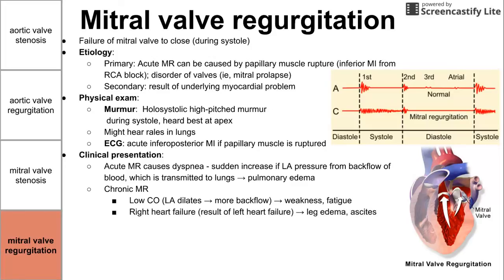You might also see right heart failure. Higher pressures in the left atria back up through the lungs into the right heart, causing it to fail, with typical symptoms such as leg edema and ascites. Left ventricular contractile dysfunction can also happen as a result of lower forward cardiac output, and as it backs up through the left atria and into the pulmonary system, it can cause dyspnea.